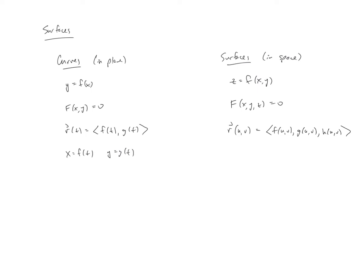From there, much like the last one, we could say the parameterization would be x equals f of u, v, y equals g of u, v, and z equals h of u, v.